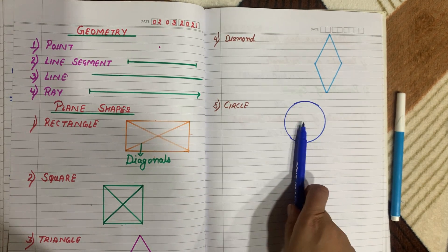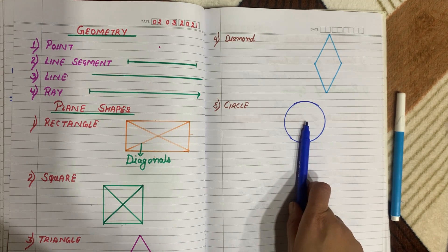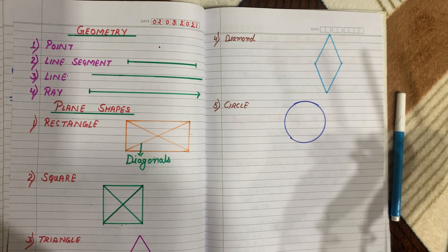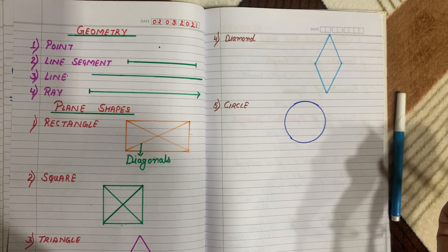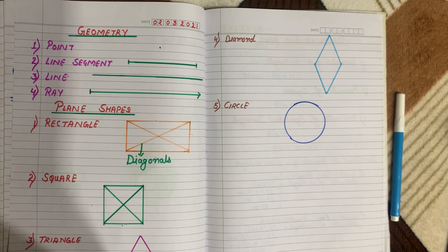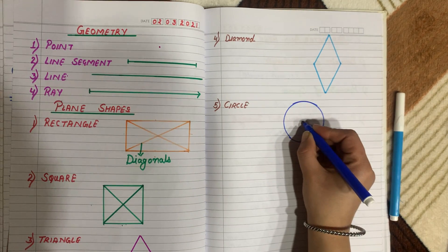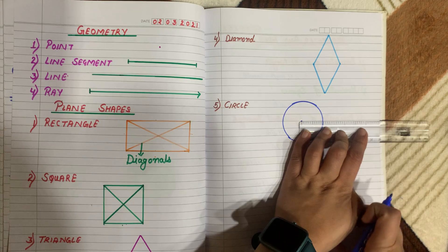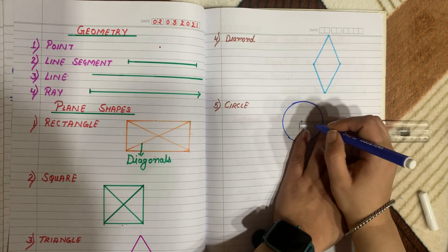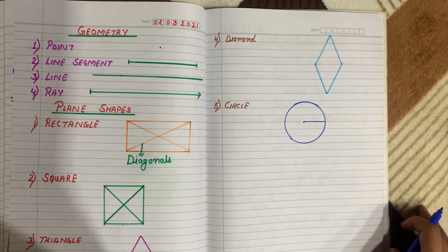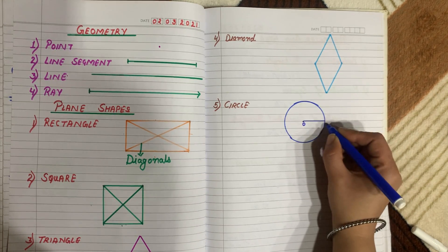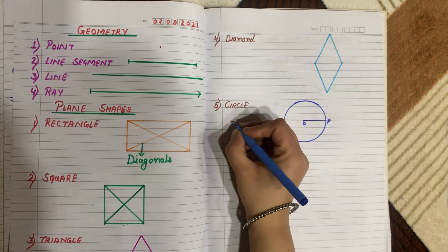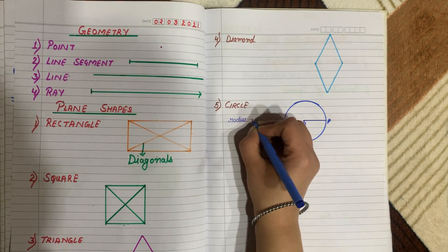Can you give me an example of a circle? Buttons, or chapatis your mom makes, or a ball — these are examples of a circle. Now, what is the radius? If this point is the center of the circle, the line joining the center to any point on the circle is called the radius. If we call the center O and the point P, then OP is the radius.